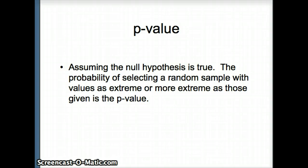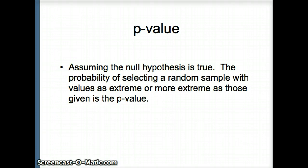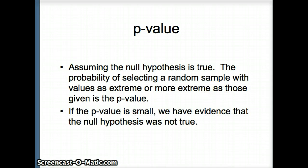The key idea is the notion of p-value. Assuming the null hypothesis is true, the p-value is the probability of selecting a random sample with values as extreme or more extreme than those given. We assume H0 is true and find the likelihood of getting a sample with an x-bar as extreme as the one given. If the p-value is small, we argue that the null hypothesis probably wasn't true — that our assumption was likely wrong.